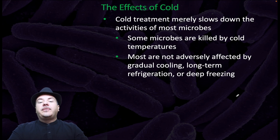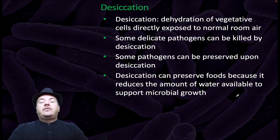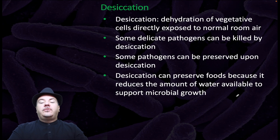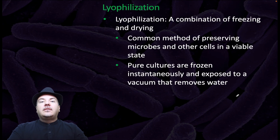Cold treatment merely slows down the activities of most microbes. Some microbes are killed by cold temperatures, but most are not adversely affected by gradual cooling, long-term refrigeration, or deep freezing. Desiccation is dehydration of vegetative cells directly exposed to normal room air. Some delicate pathogens can be killed by desiccation, while some pathogens can be preserved by it. Desiccation can preserve foods because it reduces the amount of water available to support microbial growth. Lyophilization is a combination of freezing and drying — a common method of preserving microbes and other cells in a viable state. Pure cultures are frozen instantaneously and exposed to a vacuum that removes water.